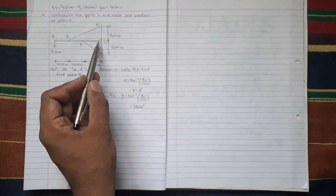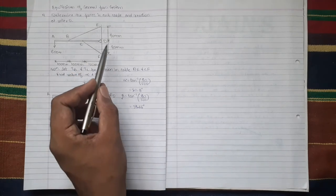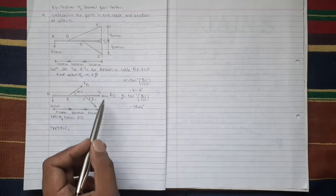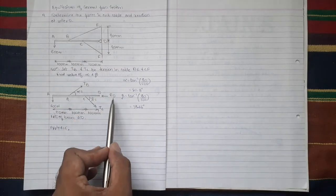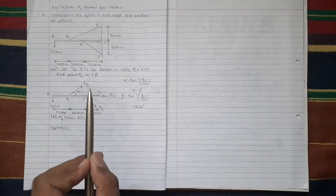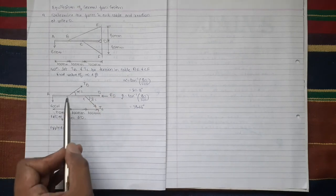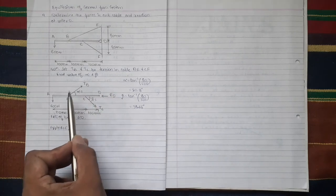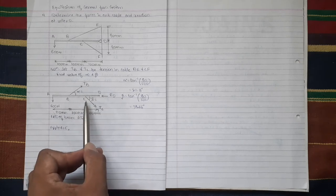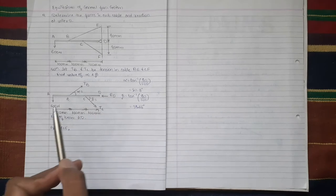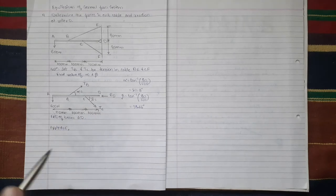At D there is a roller support. So reaction exerted by the surface will be perpendicular to the surface. So RD is perpendicular to the surface and it is assumed to be acting towards left. Our aim is to find out the value of tension force in cable BE, that is TB, and tension force TC in cable CF. We will apply conditions of equilibrium.